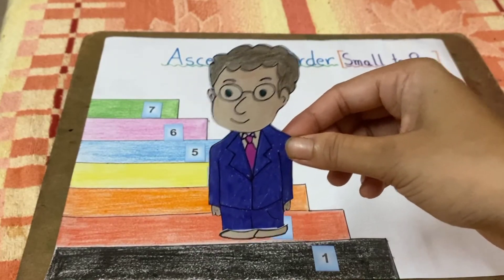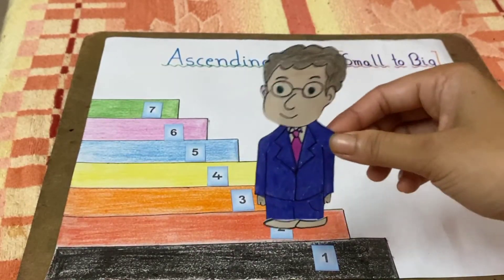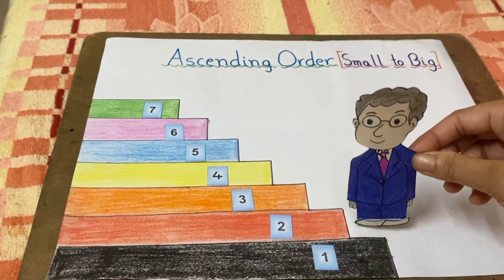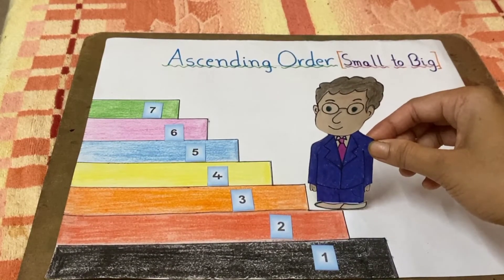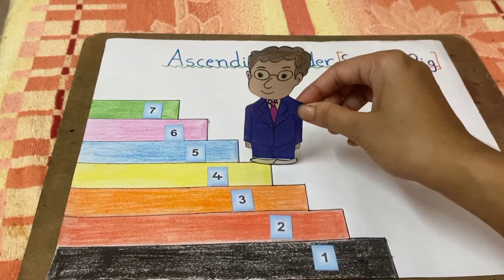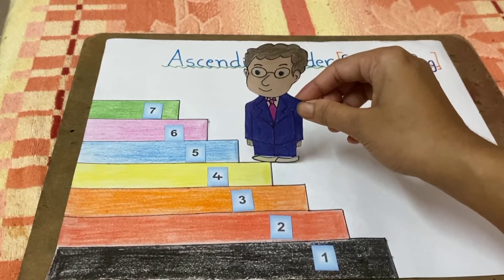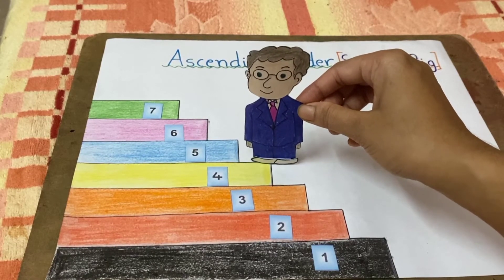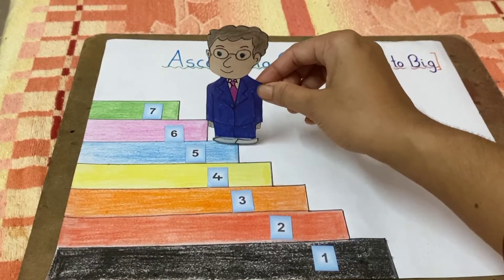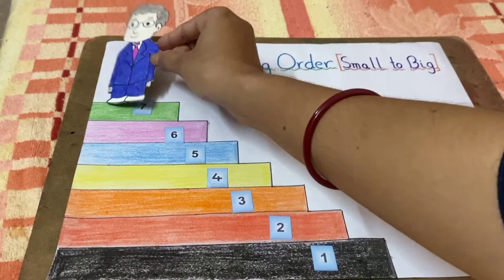And when he starts moving: one, two, three, four, the number gets increasing from small number to big number. Five, six, seven.